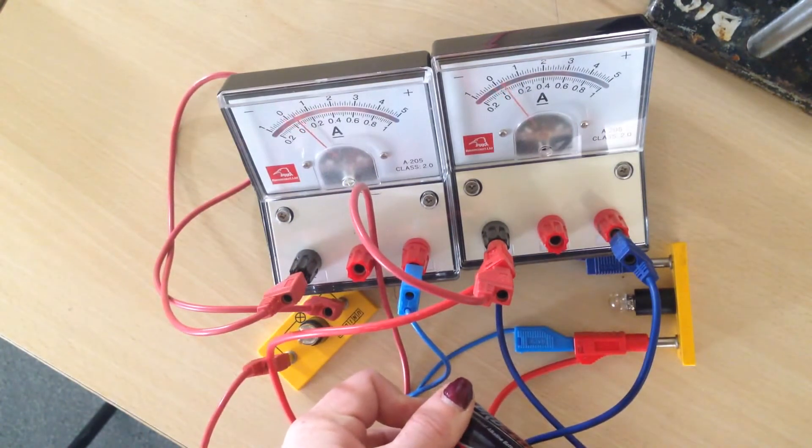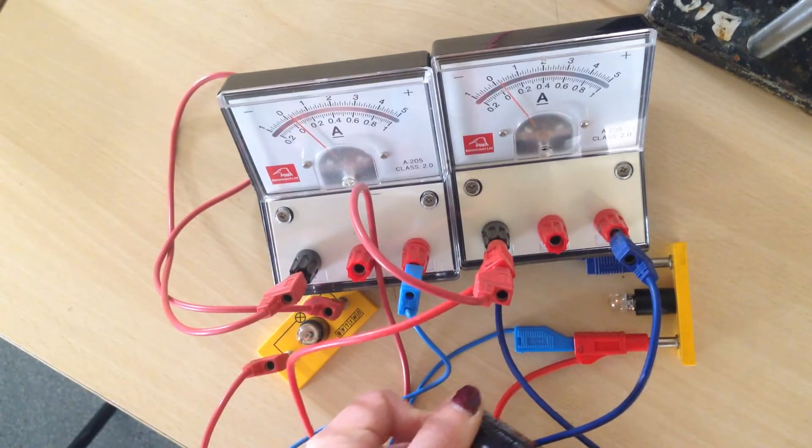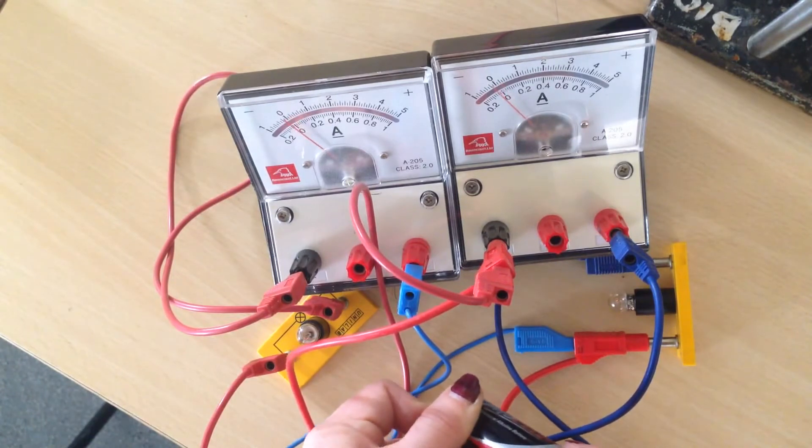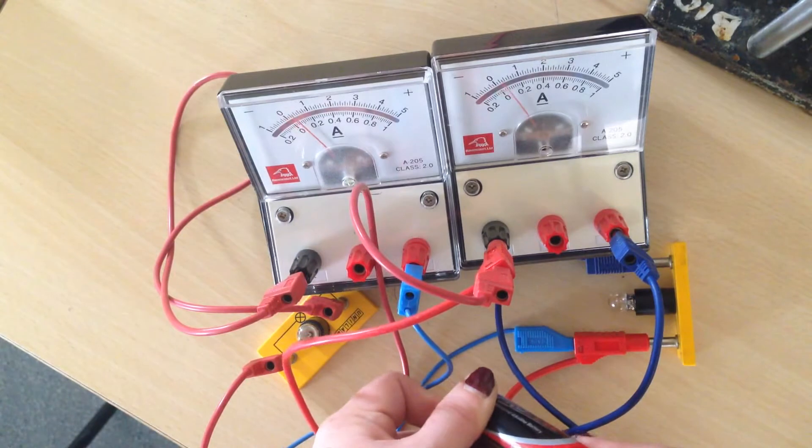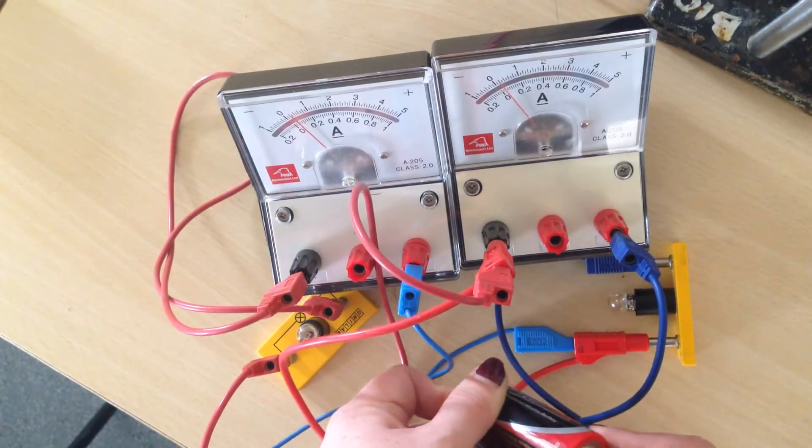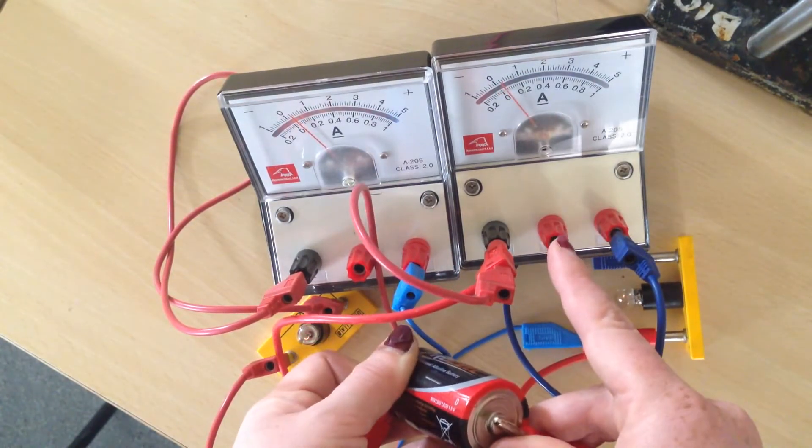So you can see the ammeters here are actually doing different things and that's fine because the ammeters are measuring the current flowing through the circuit and for a circuit that is in parallel, the current is equal to the sum of the ammeters. So to find the total current, you'd have to add the reading of this ammeter to the reading of this ammeter.